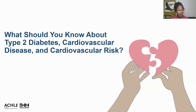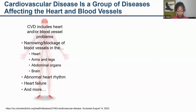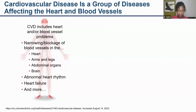Cardiovascular disease is really a group of diseases that affects the heart and blood vessels. It includes narrowing or blockages of the blood vessels in the heart, the arms and legs, abdominal organs, and the brain. Peripheral vascular disease, abnormal heart rhythms, and heart failure all fall under this broad term.